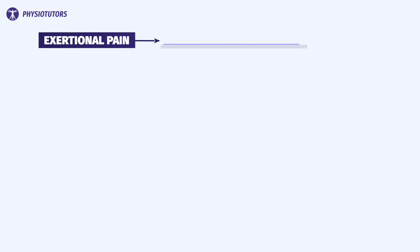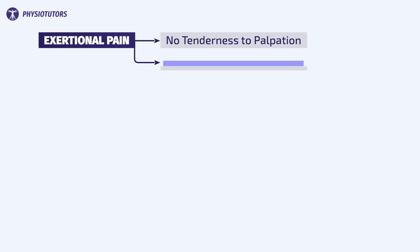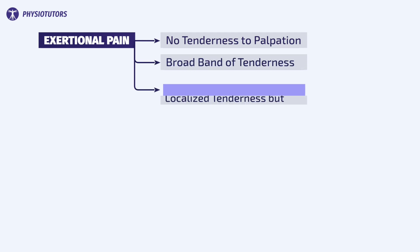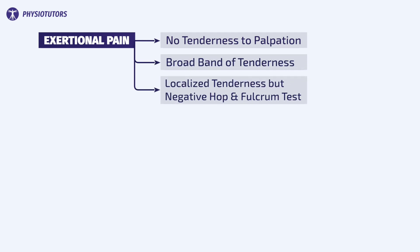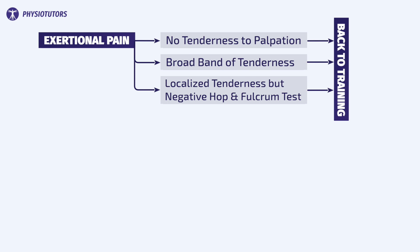These findings lead to the following decision algorithm for the military population included in the study. In case a patient shows up with exertional pain at the medial tibia, the following algorithm is applied. In case there is no tenderness, the tenderness is found in a broad band, or there is local tenderness but the hop test and the fulcrum test are negative, the patient can resume training.